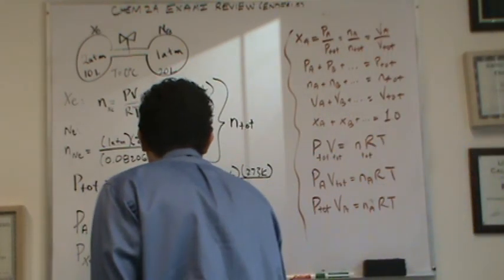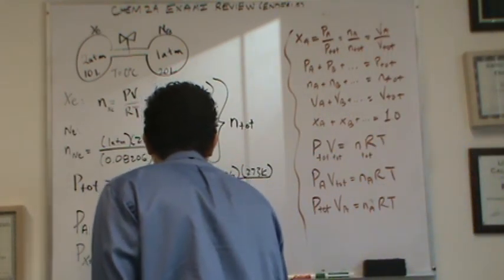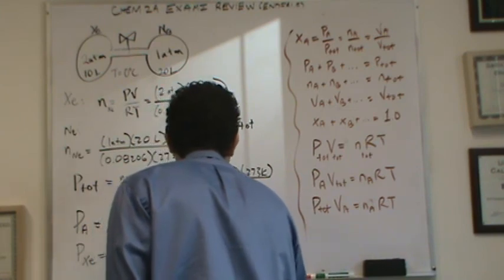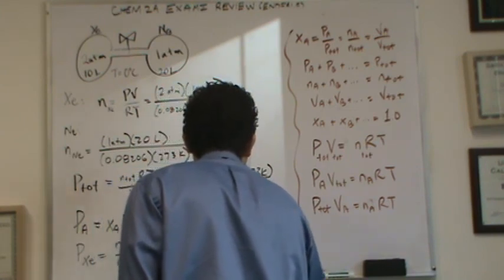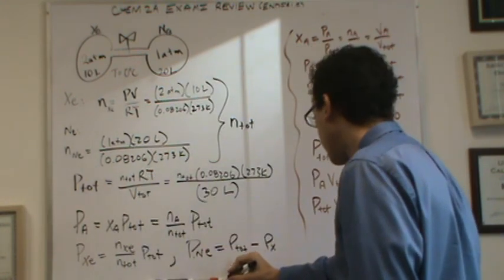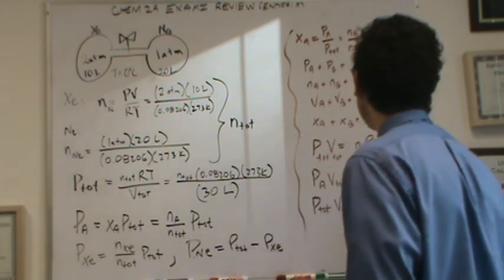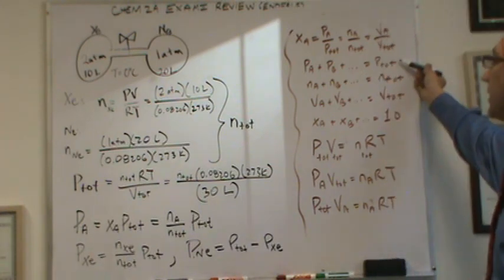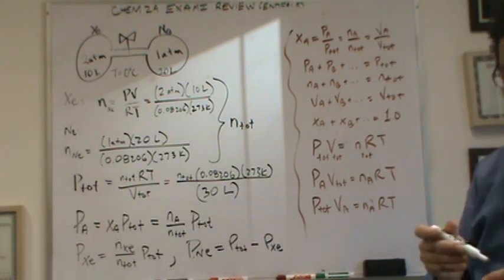And then if you wanted the partial pressure of neon, it's just the total pressure minus the partial pressure of xenon. I'm just using this equation right here to be able to solve for that.